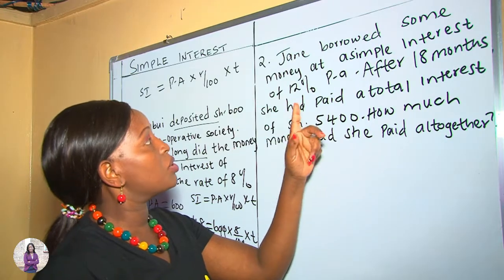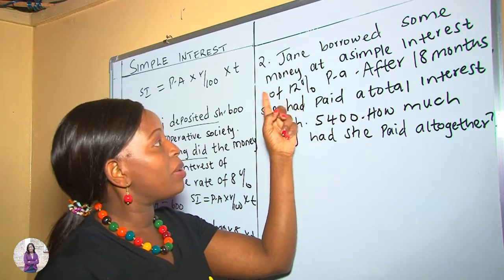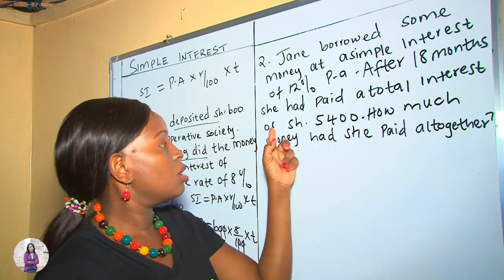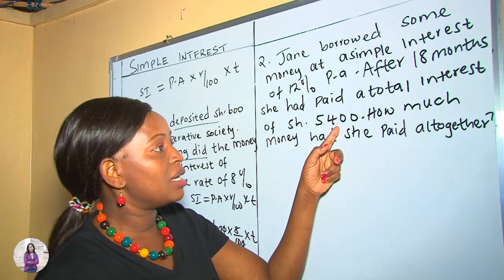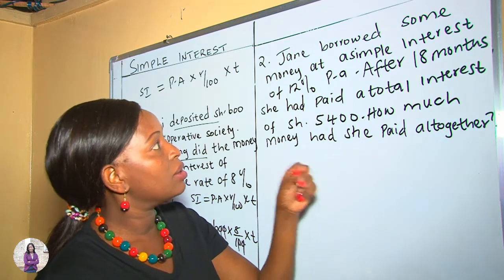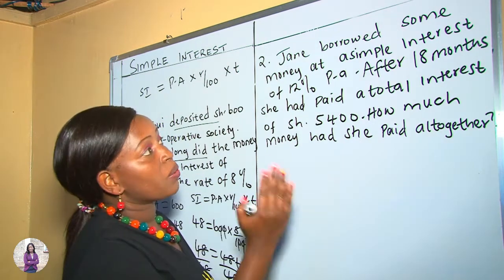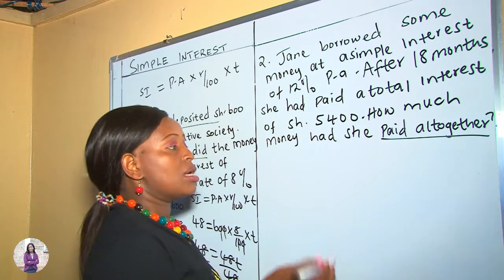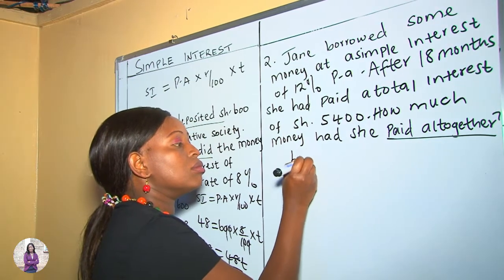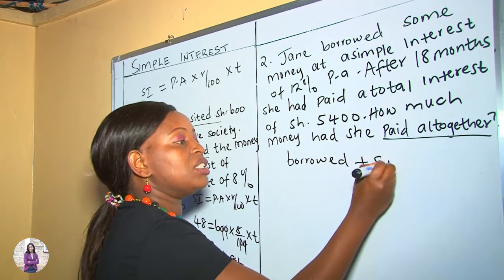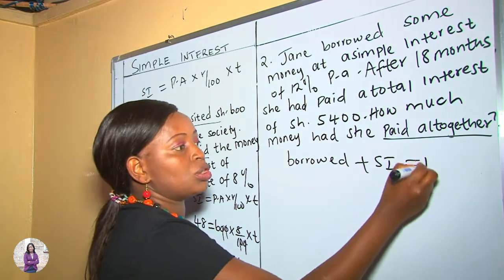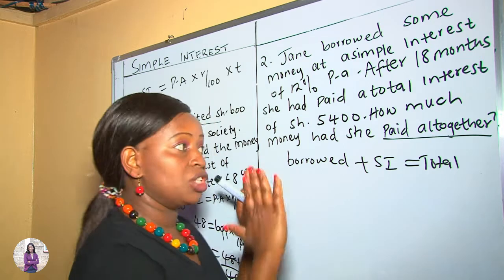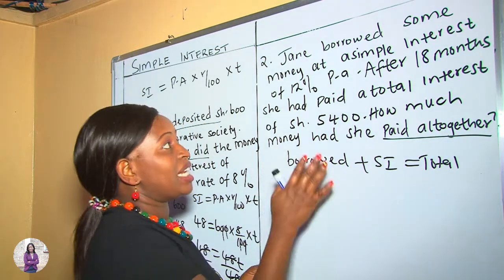Let's do another example. In example 2, we are told that Jenny borrowed some money at a simple interest of 12% per annum. After 18 months she had paid a total interest of 5,400. How much money had she paid altogether? We need to read and analyze the question. 'Altogether' means the money borrowed plus the simple interest — that gives us the total amount she paid.